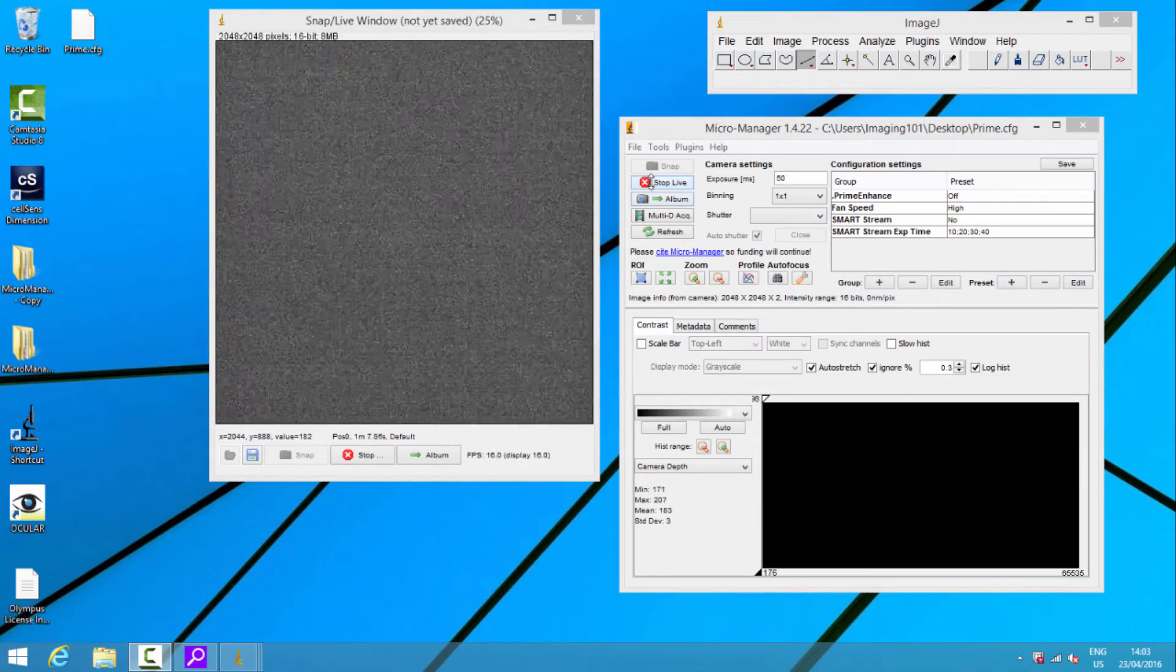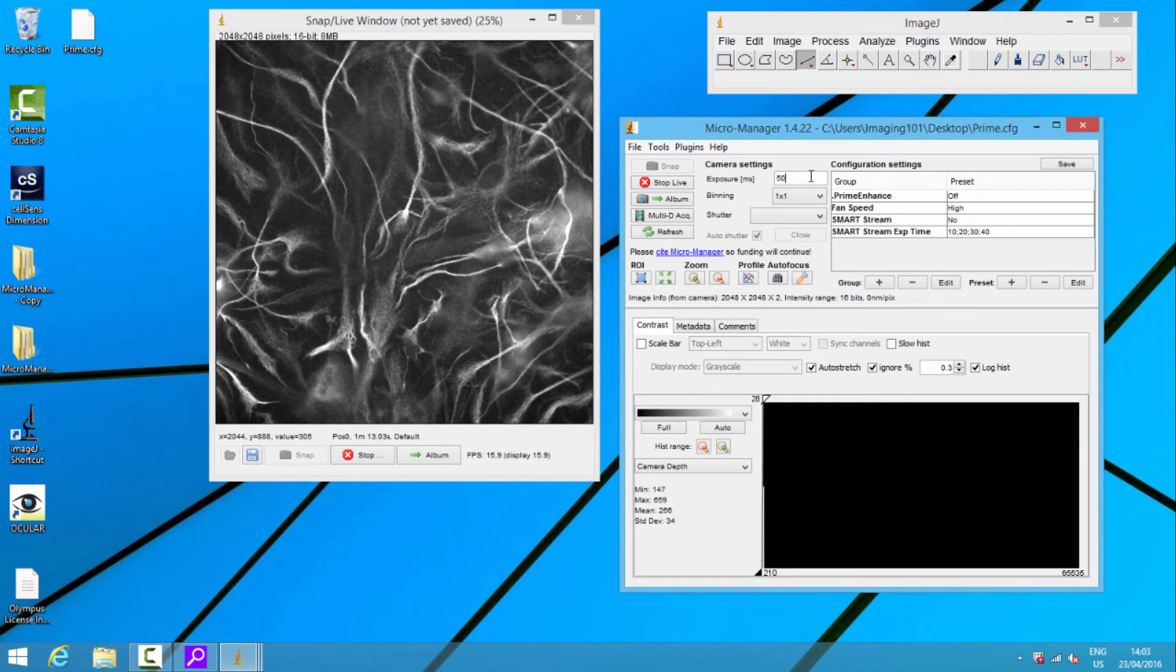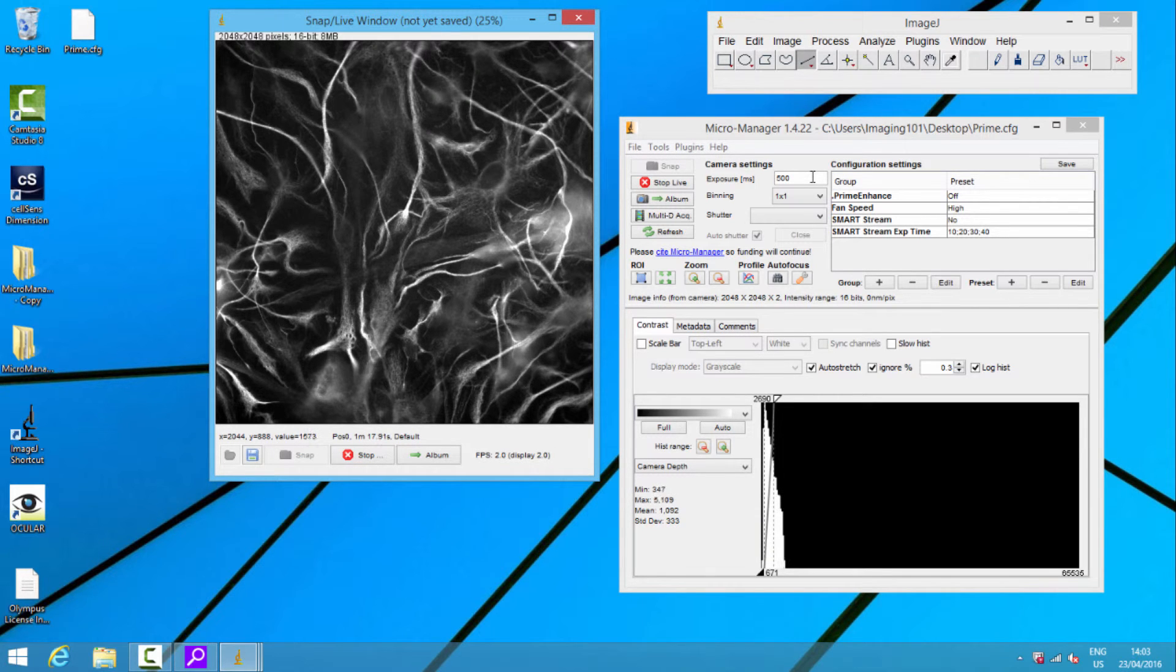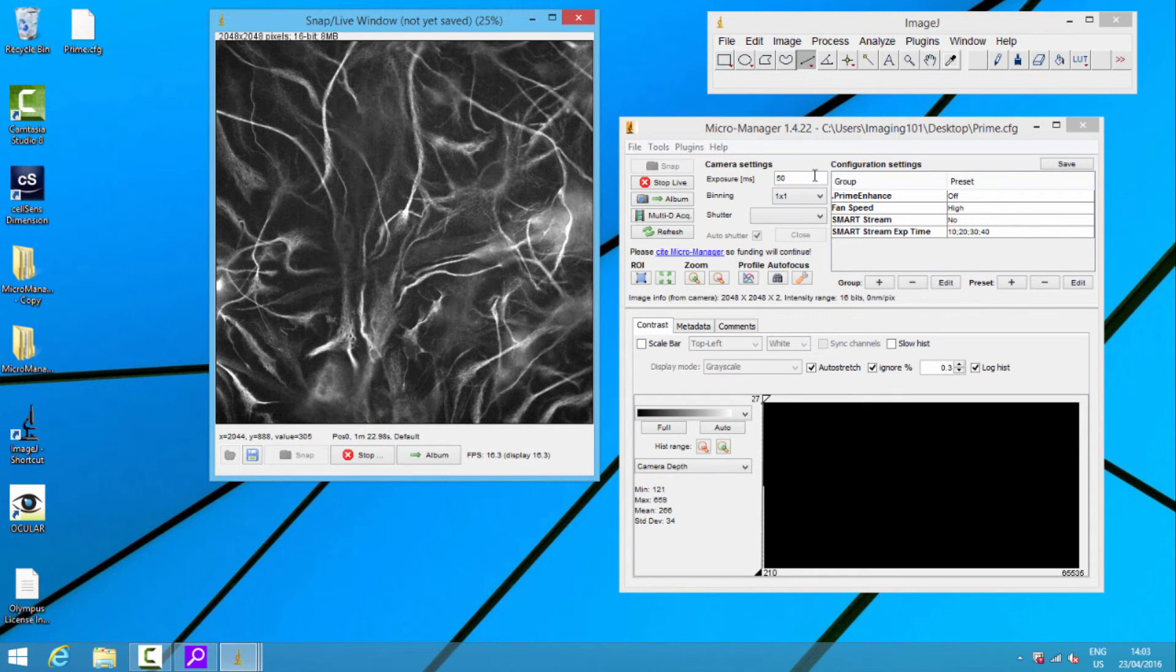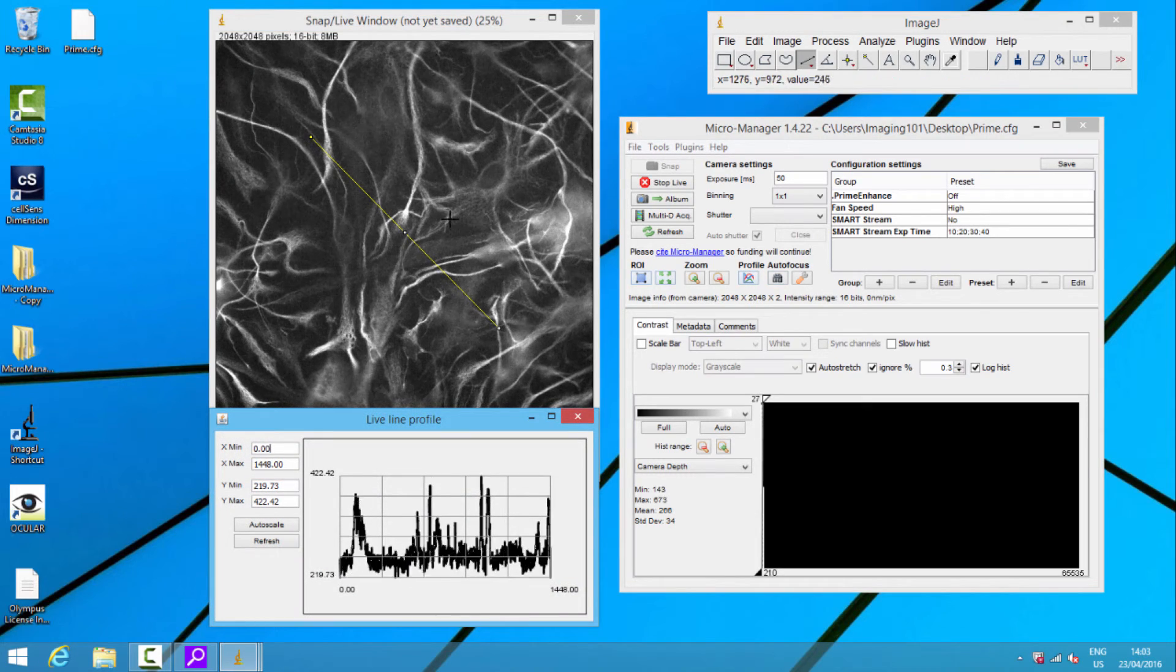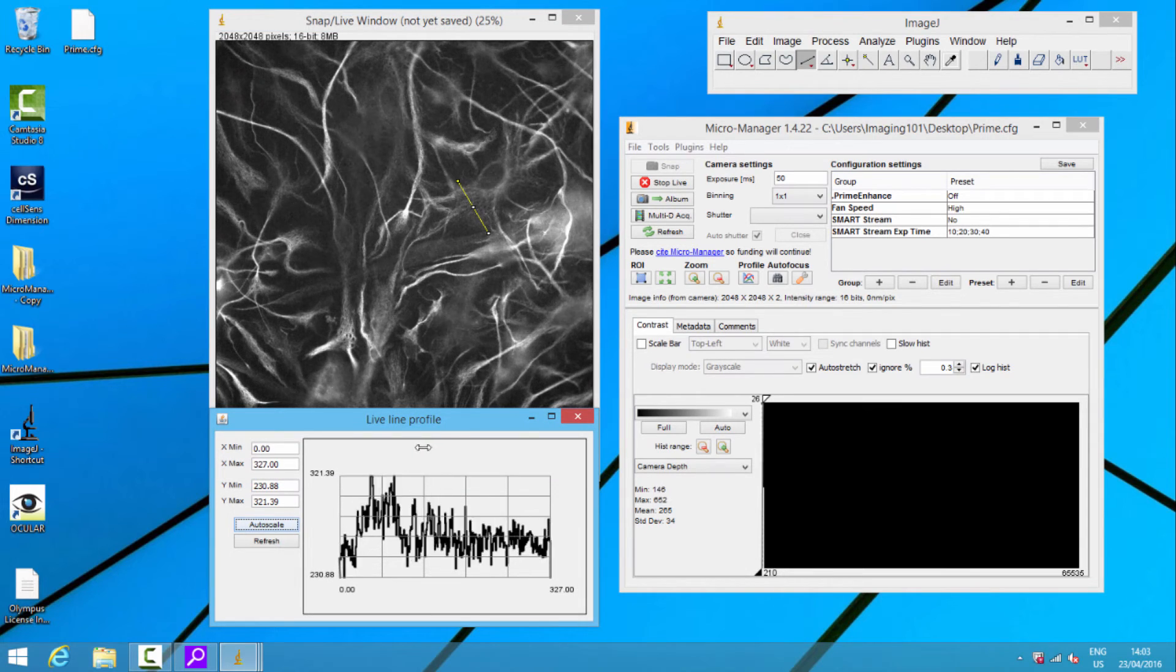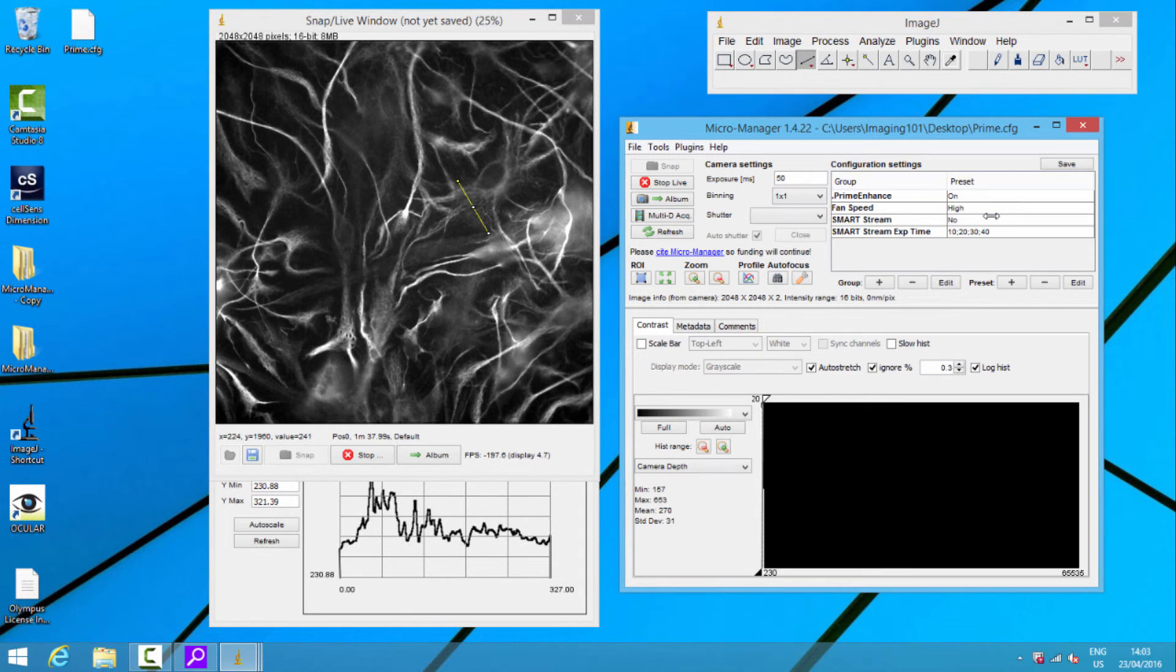So now we're inside Micromanager. Let's just put some light on the sample. There we are. 50 milliseconds we've got. And you can see that noise bouncing around, right? It's a low signal. If we put it up to 500 milliseconds, we now get an image that we're kind of happy with. But we don't want 500 milliseconds on the sample. Really, in a time-lapse experiment, that'll do a lot of damage. So let's just put a little line profile on. Let me just draw that across that little region there. Now, let's turn on Prime Enhance. Look at that line profile change. Look at the quality of the image change.